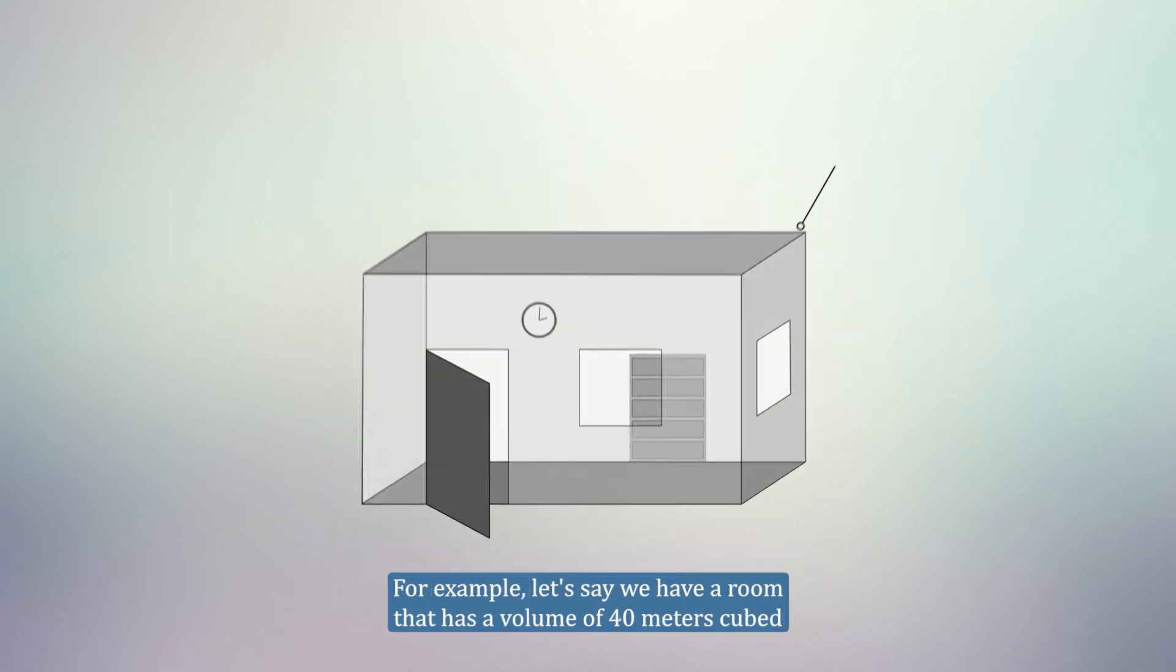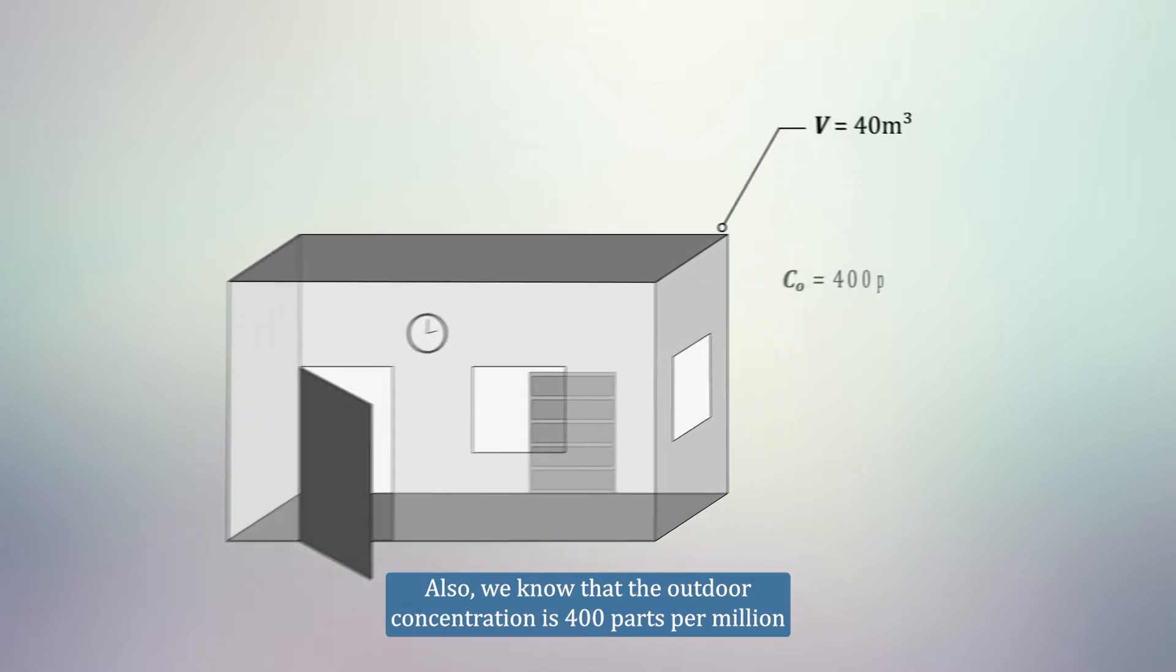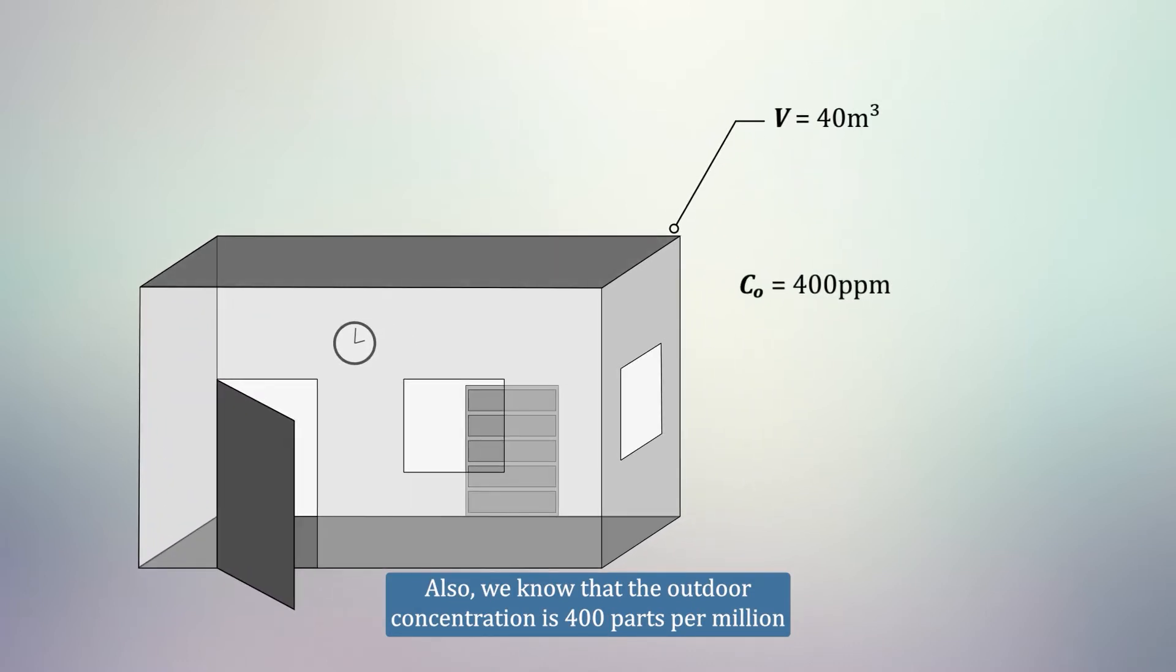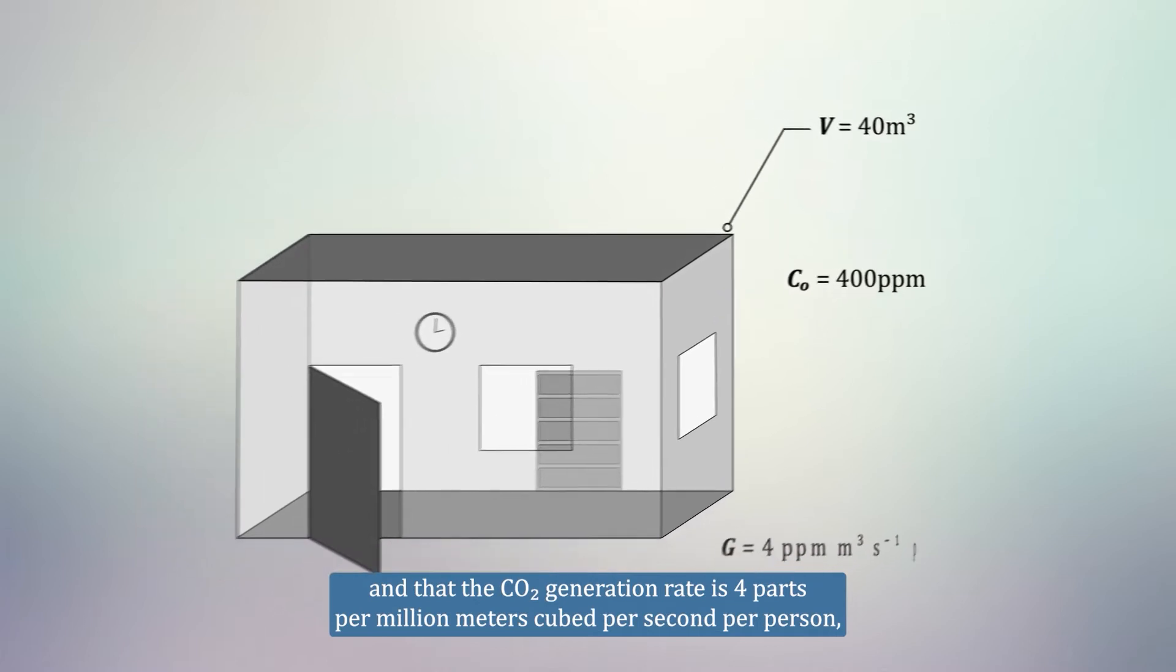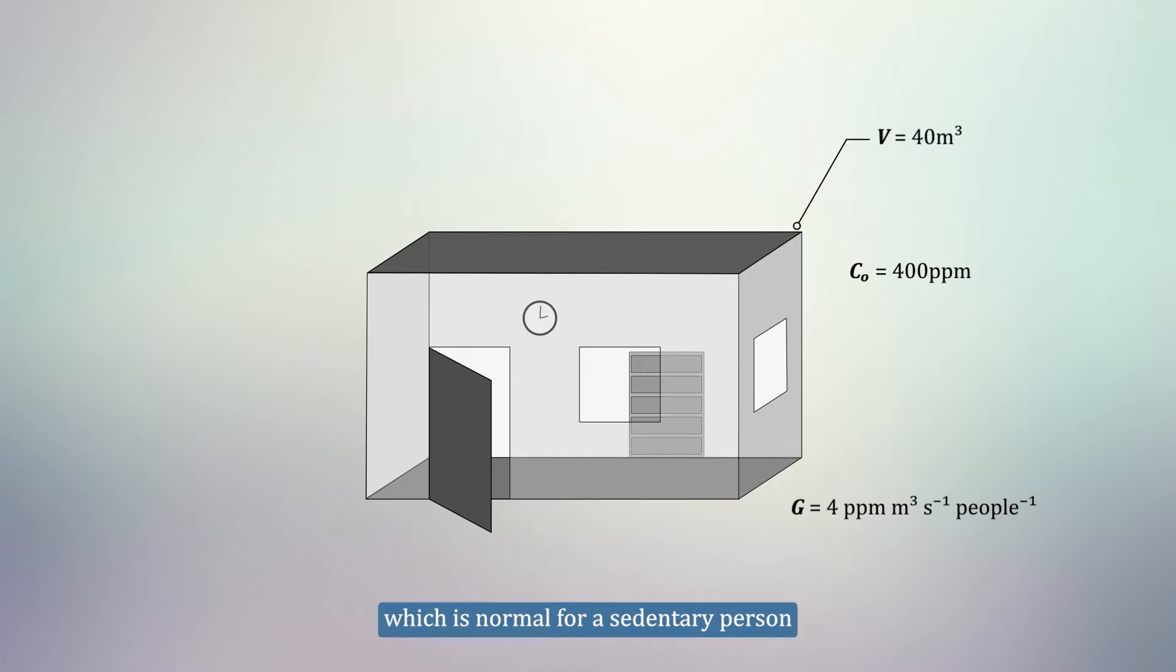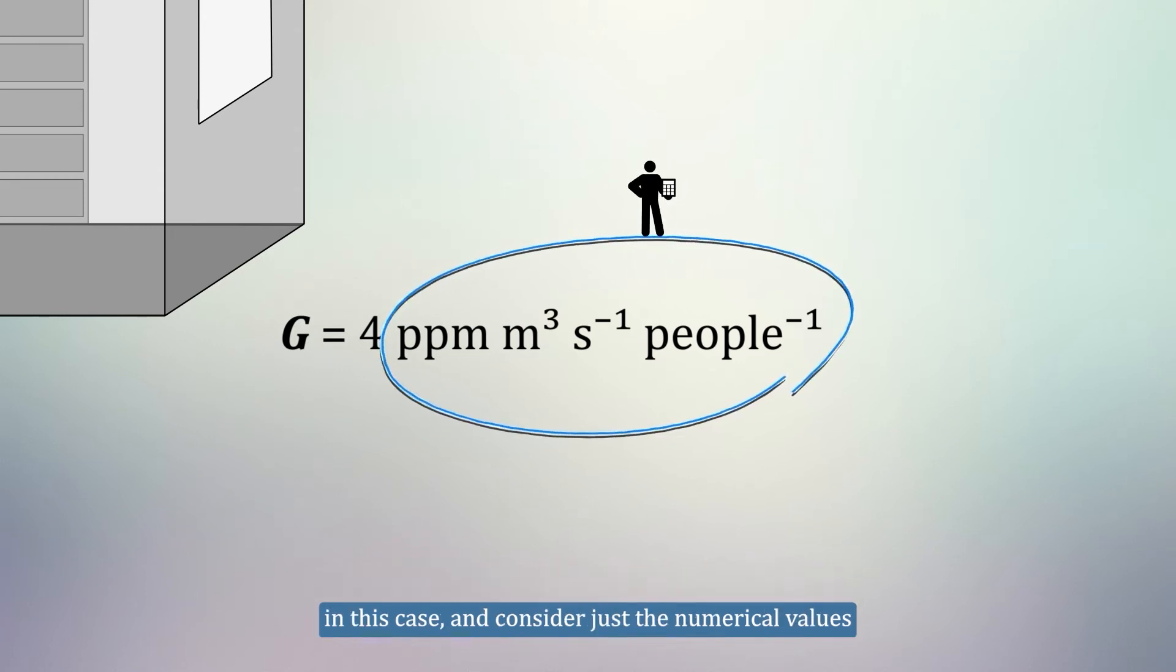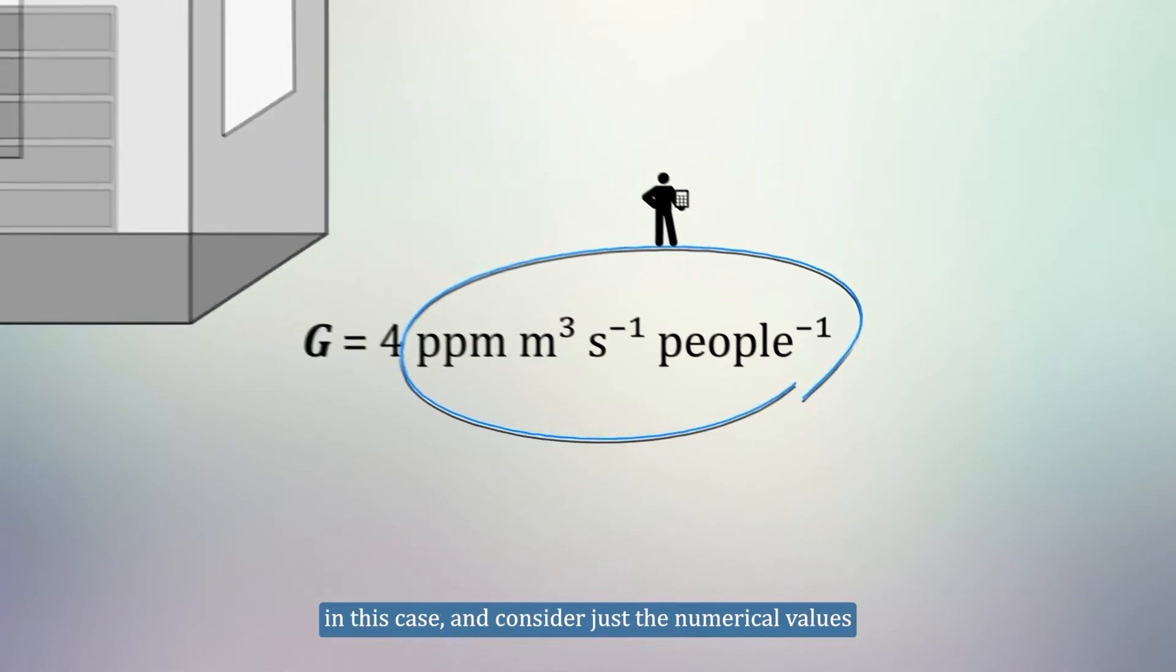For example, let's say we have a room that has a volume of 40 metres cubed. This could be a room of say 4 by 4 by 2.5 metres. Also, we know that the outdoor concentration is 400 parts per million, and that the CO2 generation rate is 4 parts per million metres cubed per second per person, which is normal for a sedentary person. The units here may look a little confusing, but we can just ignore them for calculations in this case, and consider just the numerical values.